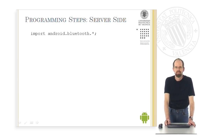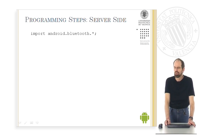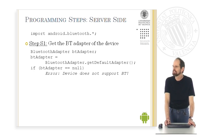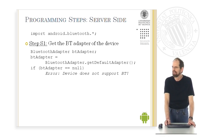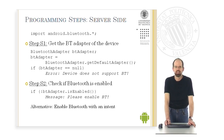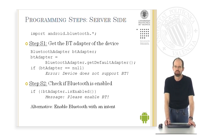The programming steps using these classes are as follows. On the server side, we first import the Android Bluetooth package. Step one is to get the Bluetooth adapter of the device using the static method BluetoothAdapter.GetDefaultAdapter, stored in a local variable. If this method returns null, there is no Bluetooth support on this device. Step two is to check if Bluetooth is enabled. If not — detected by calling isEnabled on the adapter — we display a message to the user to enable Bluetooth. Alternatively, Bluetooth can be enabled programmatically with an intent.